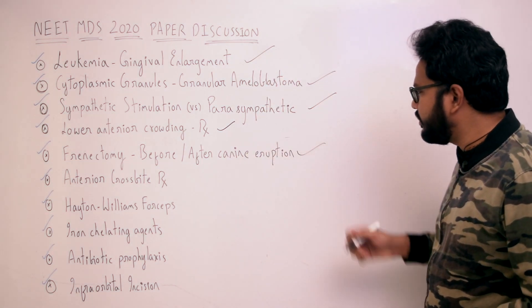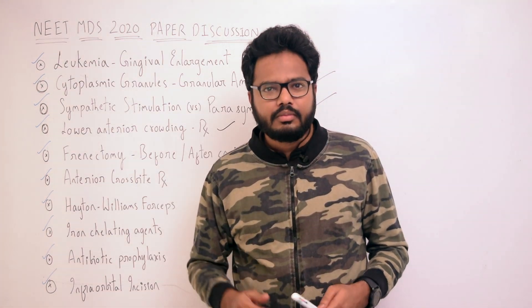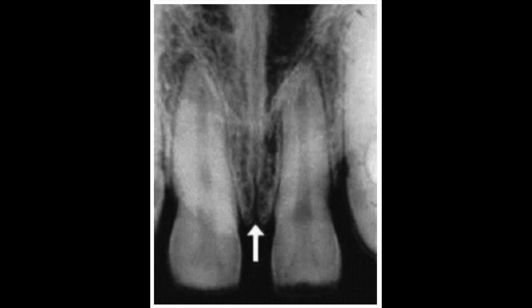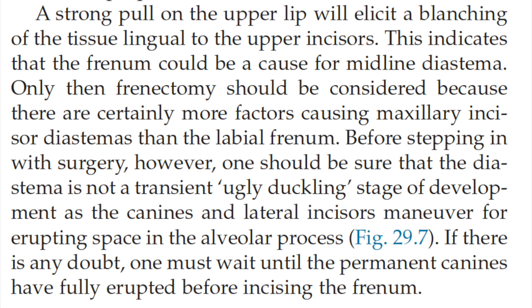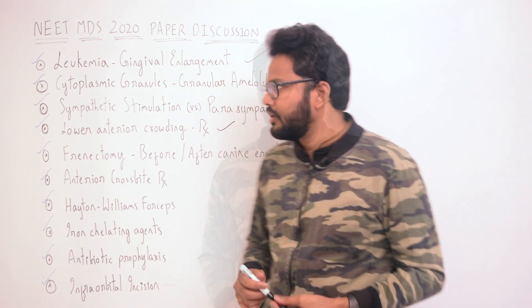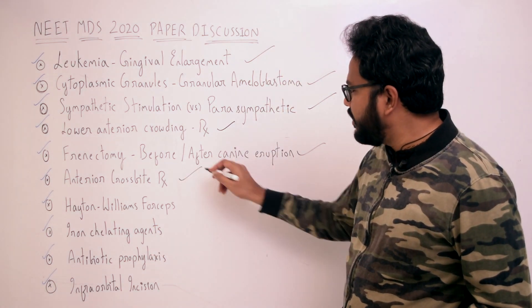The next topic is frenectomy — is it done before or after canine eruption? A strong pull on the upper lip will elicit blanching of tissue lingual to the upper incisors, indicating the frenum could be a cause for midline diastema. Frenectomy should only be considered after ruling out other causes. Importantly, one must wait until the permanent canines have fully erupted before incising the frenum, so the diastema is not a transient ugly duckling stage of development.